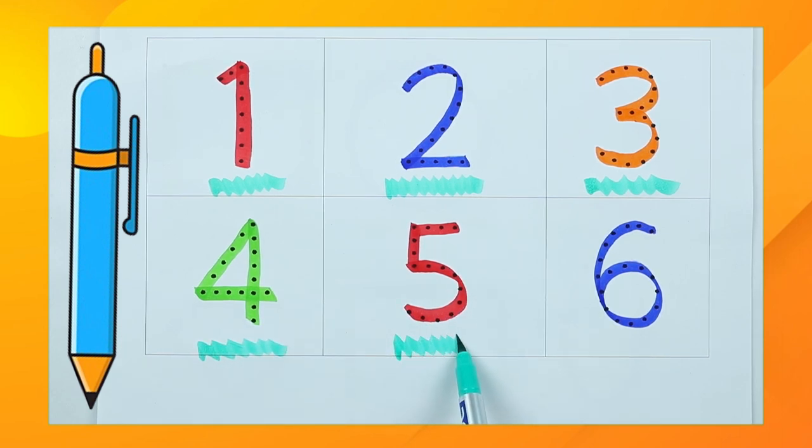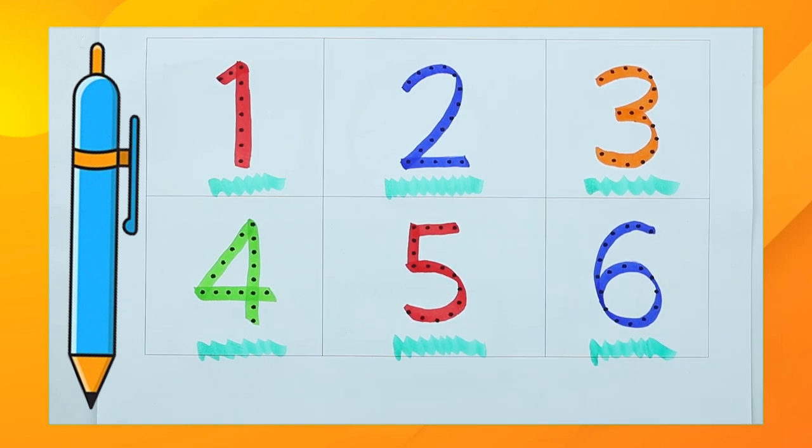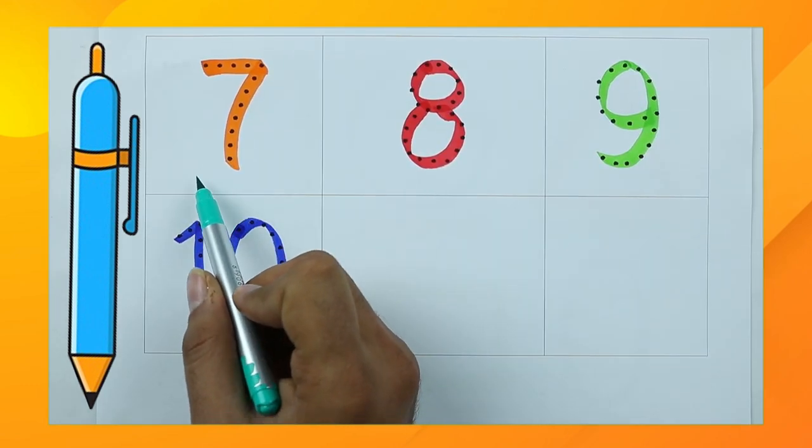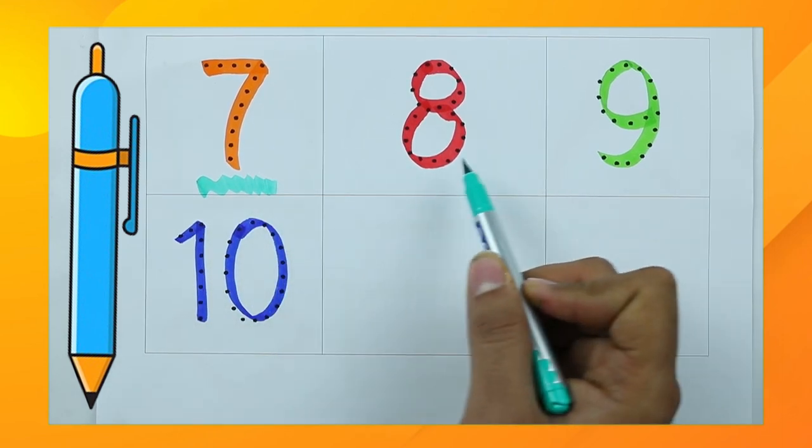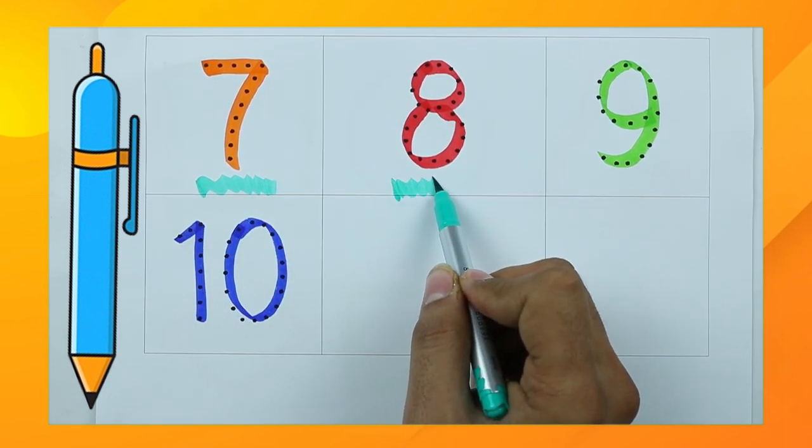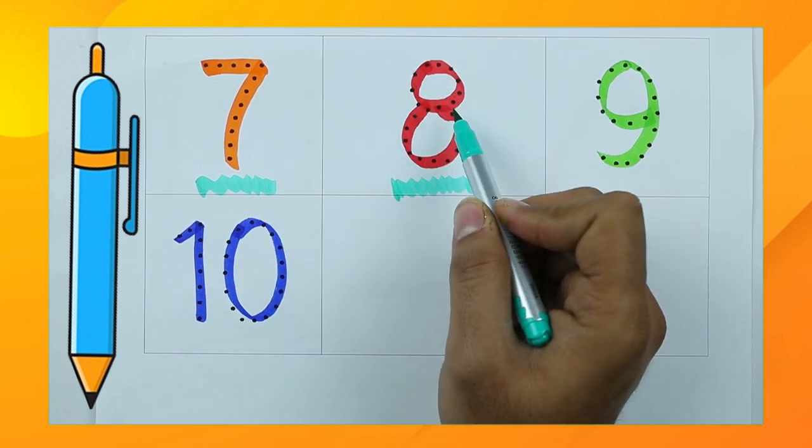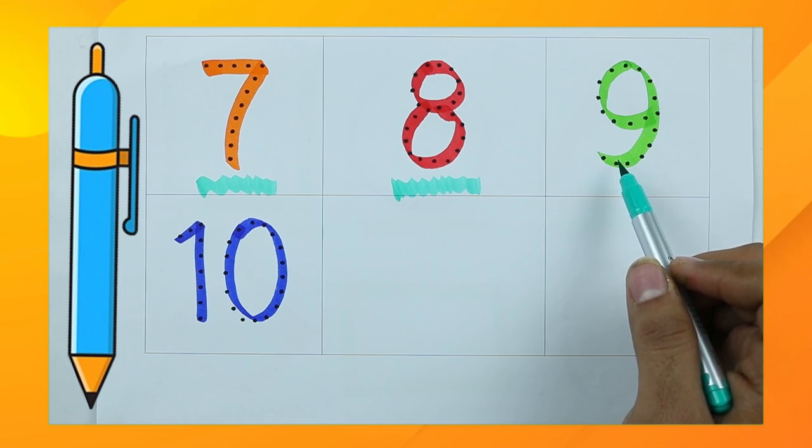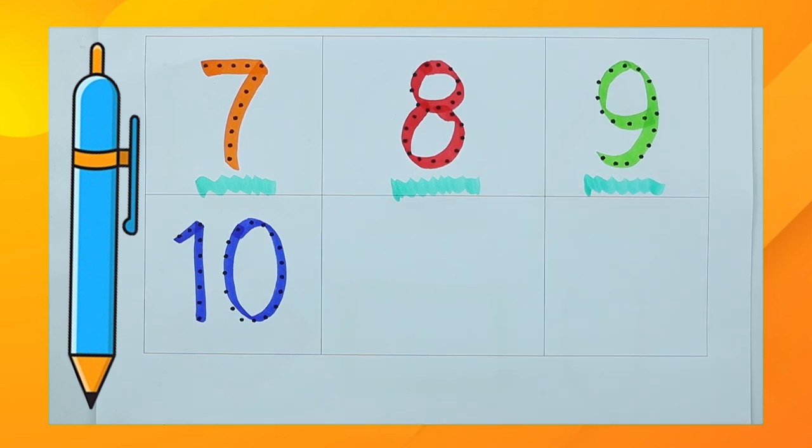It's number five with red color. It's number six with blue color. It's orange color number seven. Which color is this? Yes, it's red color number eight. Which color is this? Green color with number nine.